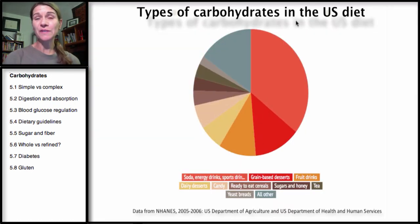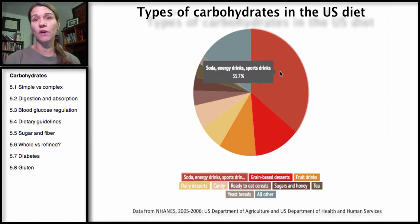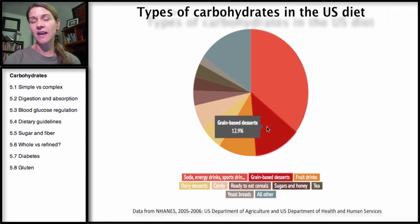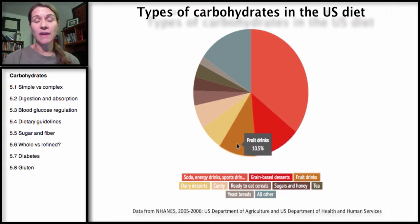These are the foods in the U.S. diet that contribute to carbohydrates. Soda, energy drinks, and sport drinks make up the largest part — almost 36% of the diet — with grain-based desserts such as cakes and cookies making up one of the next largest parts. Just below that we have fruit drinks, which includes fruit juices, at almost 11%.